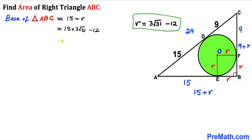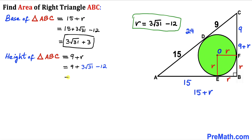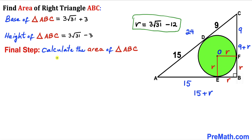Simplifying the base: 15 + 3√31 - 12 = 3√31 + 3. For the height, BC = 9 + r = 9 + (3√31 - 12) = 3√31 - 3.